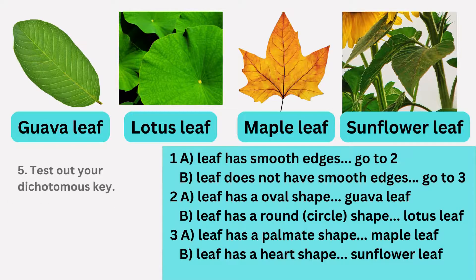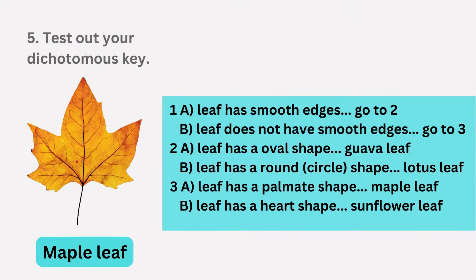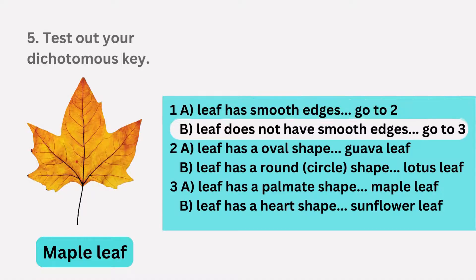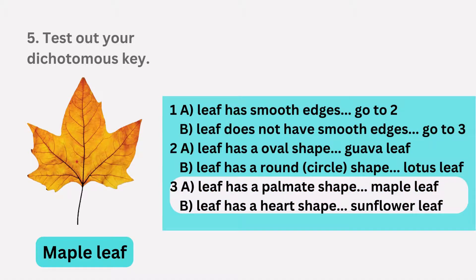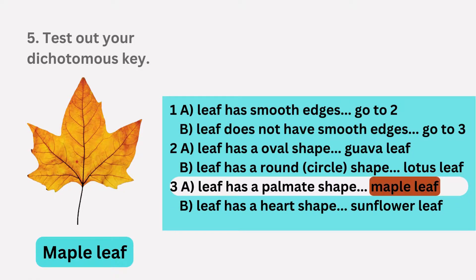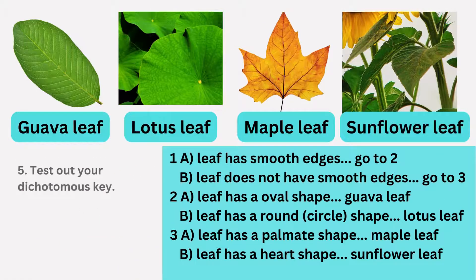Now let's put our key to the test by identifying a maple leaf. Starting at step one, we determine if the leaf has smooth edges or not. Since it has lobed edges, we proceed to step three. Moving to step three, we assess if the leaf has a palmate shape or a heart shape. Since it exhibits a palmate shape, we accurately identify it as the maple leaf.